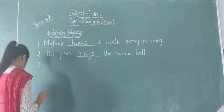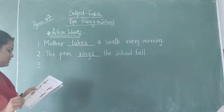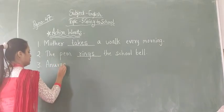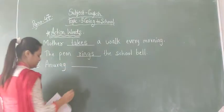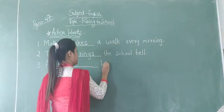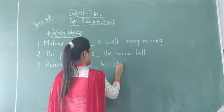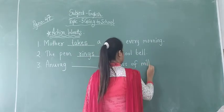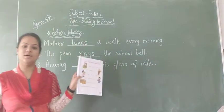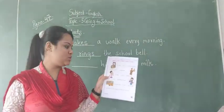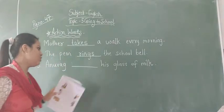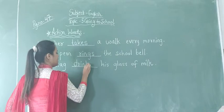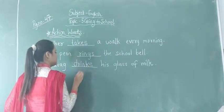After that, number three sentence: 'Anurag blank his glass of milk.' What is Anurag doing in the picture? Anurag drinks a glass of milk. So here we will write the spelling of drinks: D-R-I-N-K-S, drinks.